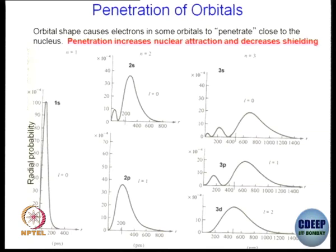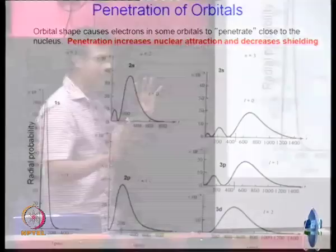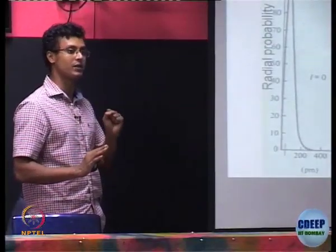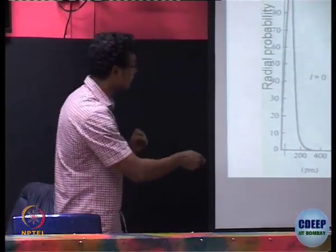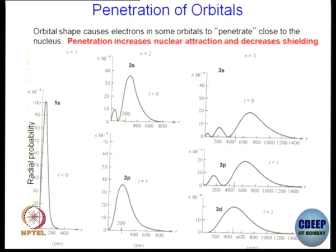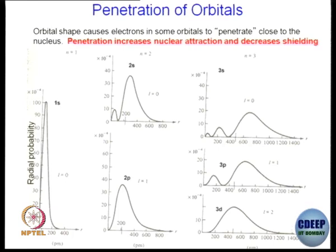Penetration means how much these orbitals are contributing towards, or how close they are to, the nucleus. As you can see, 1s is very close to the nucleus and thereby the penetration of 1s is going to be maximum — it can neutralize the positive charge most efficiently. For example, 3d is distributed such that the maximum probability of finding 3d electrons is really far from the nucleus. Therefore, the neutralization ability of 3d electrons is going to be least out of all these orbitals.